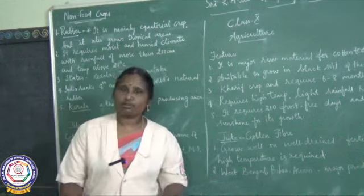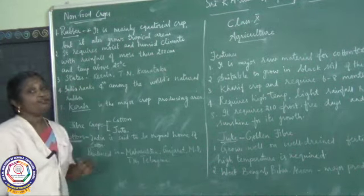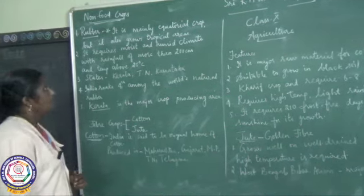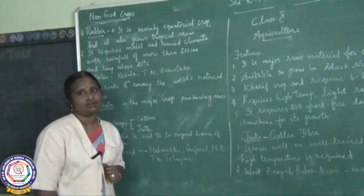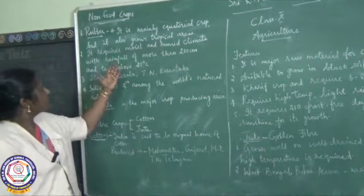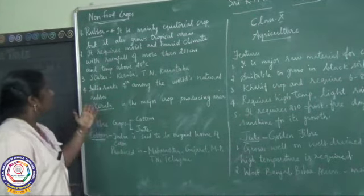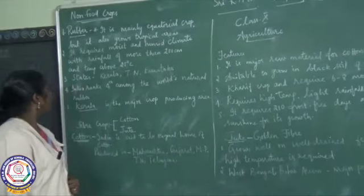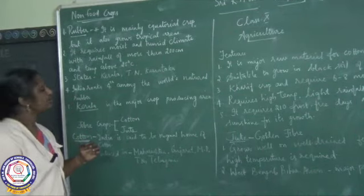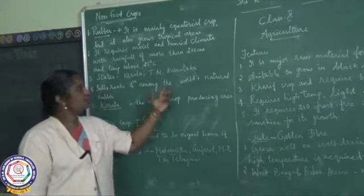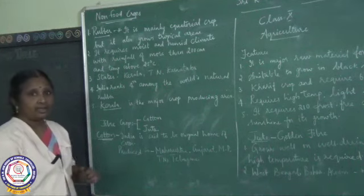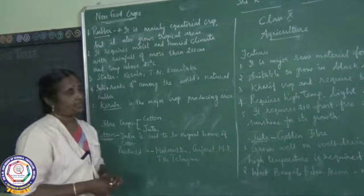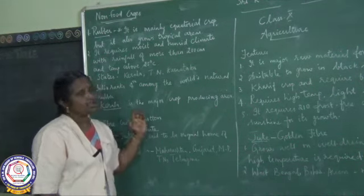After the beverage crops — coffee and tea — we now move to non-food crops, that is rubber. It is mainly grown in equatorial regions but also grows in tropical areas. It requires moist and humid climate with rainfall of more than 200 cm and temperature of about 25 degrees Celsius. States producing rubber are Kerala, Tamil Nadu, and Karnataka. India ranks almost 4th among the world's natural rubber producers, with Kerala as the major producer.